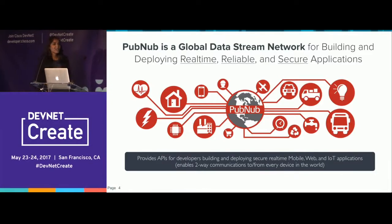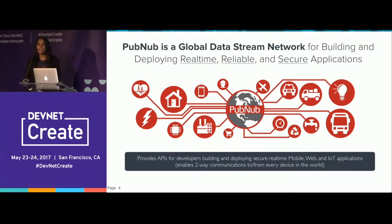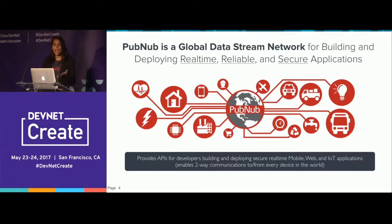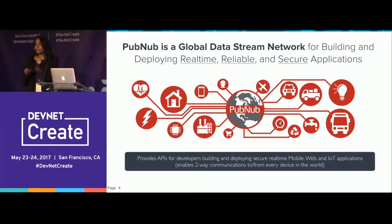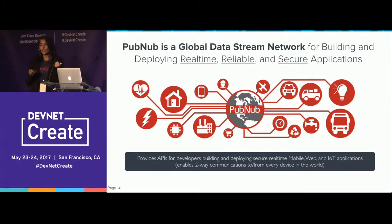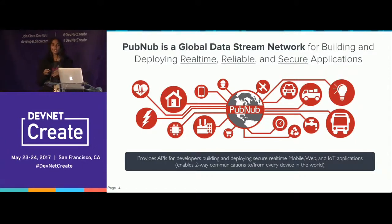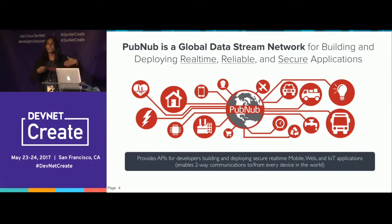Let me give you a bit of context and explain what PubNub is. PubNub provides real-time infrastructure as a service. Imagine you wanted to build a real-time application like chat, taxi dispatch, a multiplayer game, or an IoT application where you're controlling all the devices in your house. You have data going between all of these different devices in real time — you click a button, your light goes on; you click a button and the garage door closes. You want that to happen instantly, not five seconds later. That's what we call real-time communication.